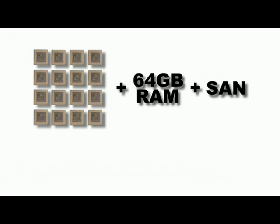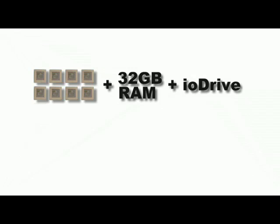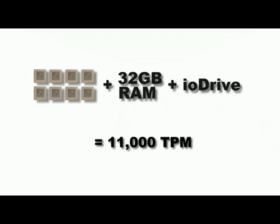One example: a customer running a transaction system with about 250 15k RPM drives, fiber channel, the whole setup — costing well over a quarter million dollars — and then a server with 16 cores, 16 Oracle licenses for each of those cores, and 64 gigs of RAM. Just that one server consumed all the IO that the SAN put out to run this database, doing about 9,000 transactions per minute. They then built a second system with half the cores, half the RAM, and half the Oracle licenses — now you only need eight — and none of the SAN. Putting the IO Drive in, they achieved 11,000 transactions per minute sustained.